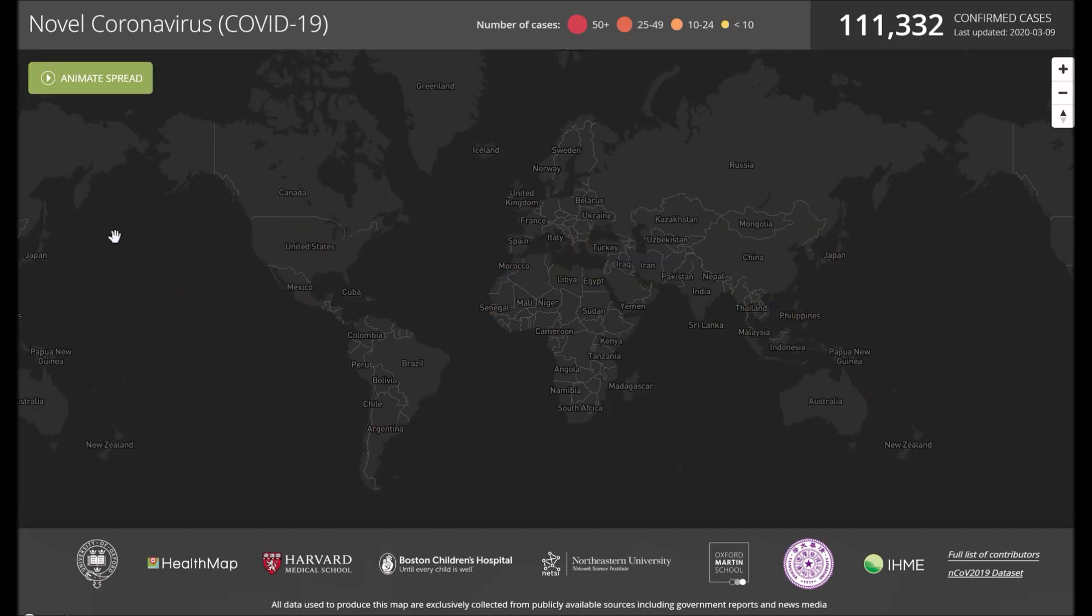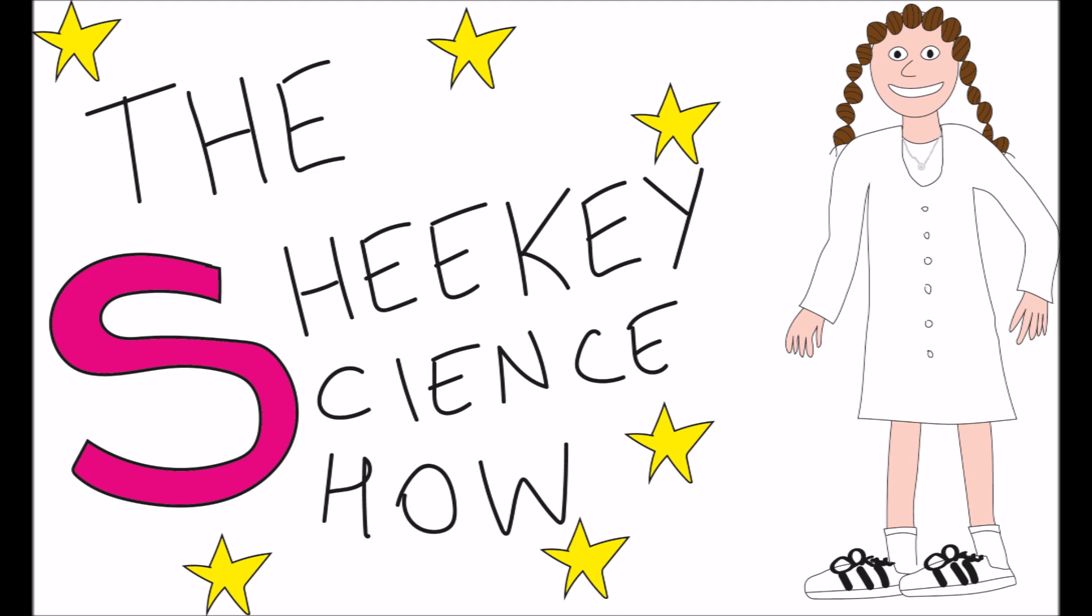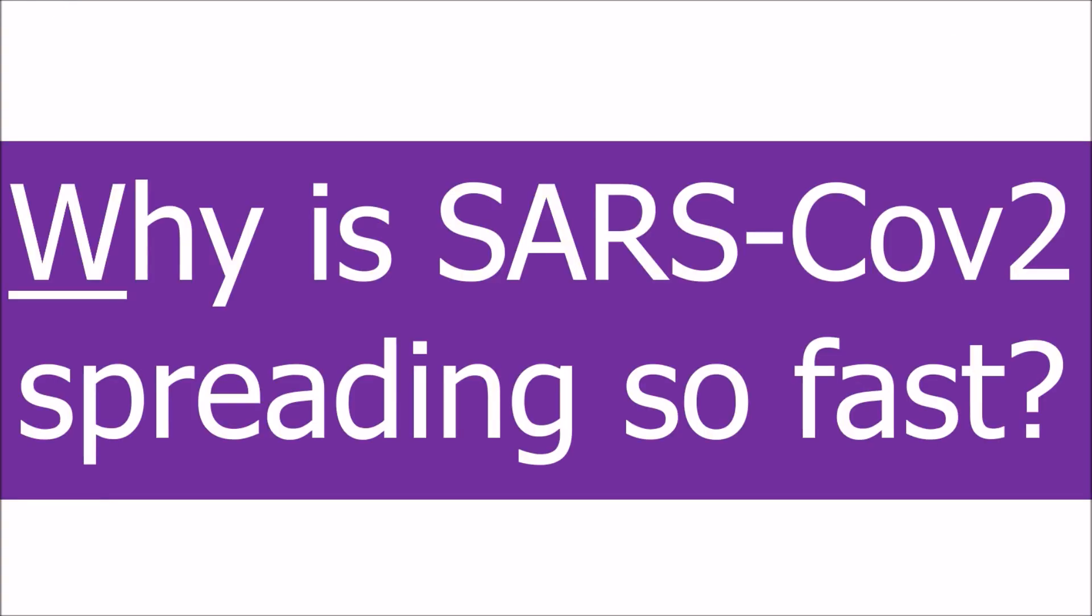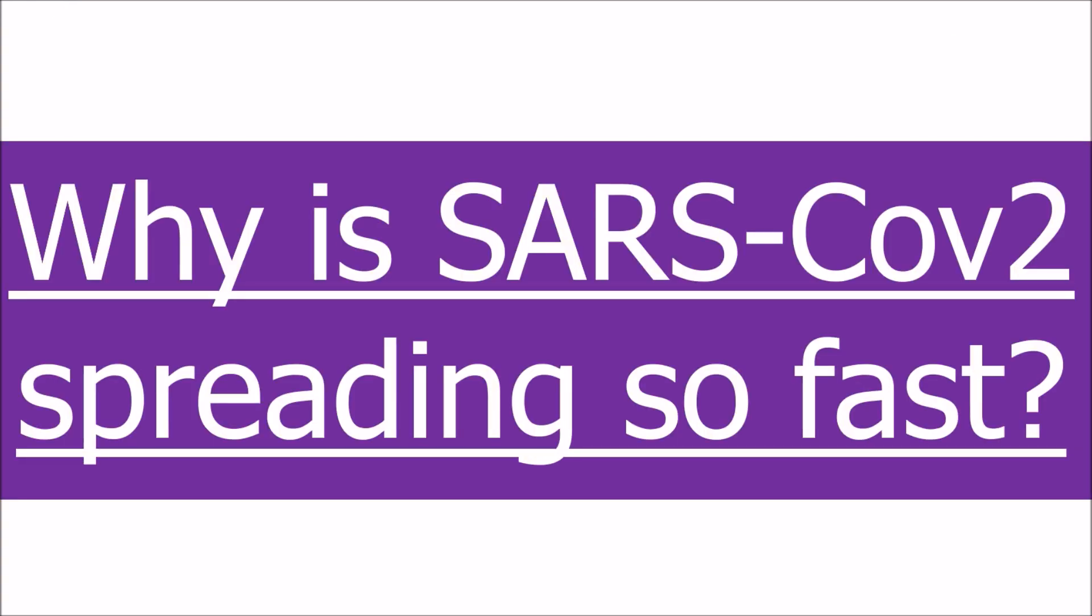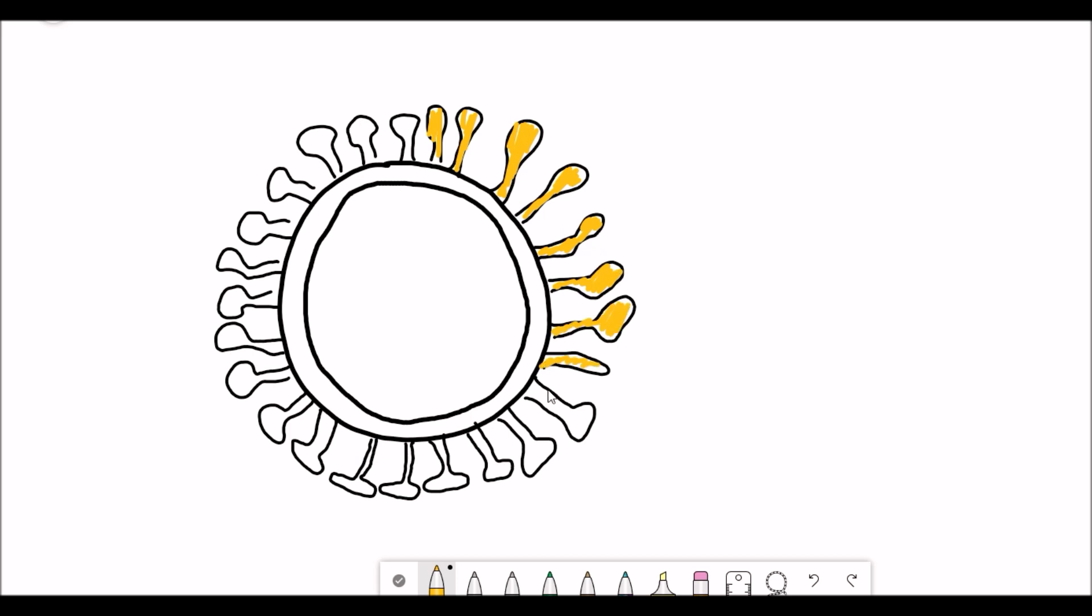Since my last video just under two weeks ago, the novel coronavirus outbreak has continued to spread, now infecting more than 100,000 people worldwide. Much scientific research is being undertaken to try and understand the transmission of the virus. In this video, we'll discuss some of the recent evidence to try and explain why this novel outbreak is spreading so fast. So to briefly recap from my last video, in 2019 a new coronavirus infecting humans emerged in Wuhan, China.